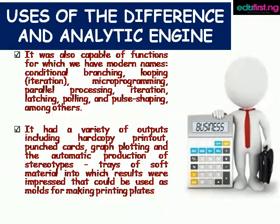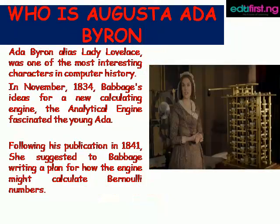Secondly, it had a variety of outputs including hard copy printouts, punched cards, graphic plotting, and the automatic production of stereotypes — that is, a tray of soft material into which results were impressed that could be used as molds for making printing plates.